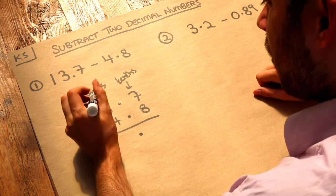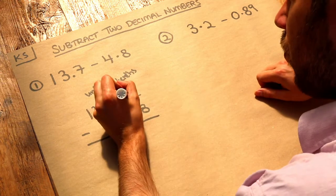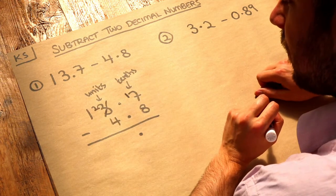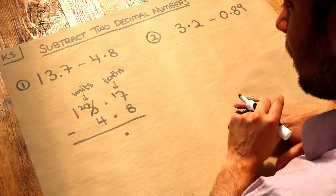We cross that out, reduce it by 1, and that means we've borrowed a 1 which we put up here. That now allows us to do 17 minus 8, which is 9.